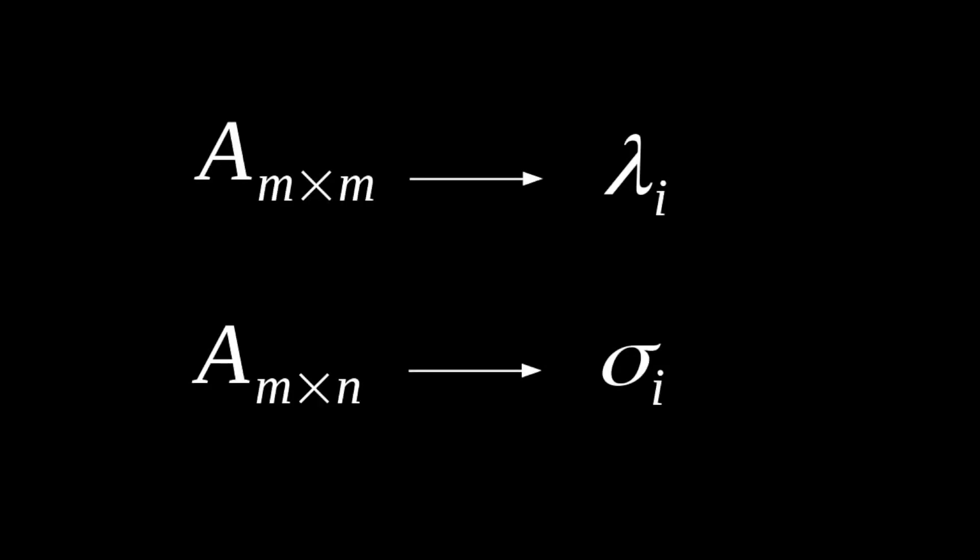Why are these singular values of any particular interest? Well, because if we have a square matrix, an m by m matrix, we can compute eigenvalues for that matrix. But if we have a non-square matrix, computing eigenvalues is particularly tricky.